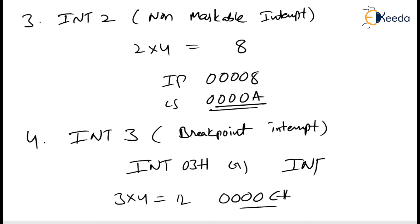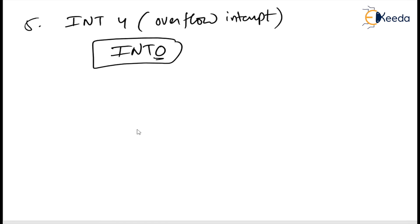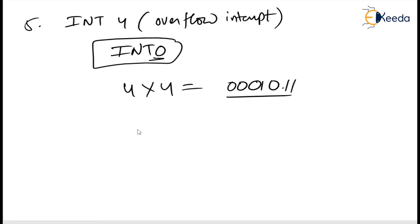The last dedicated interrupt is INT4, called overflow. This interrupt occurs if the overflow flag is set and the microprocessor executes the INTO (interrupt on overflow) instruction. It is used to detect overflow errors in signed arithmetic. The ISR value is type 4 multiplied by 4 equals 16, which is 00010H in the interrupt vector table. These five are called dedicated interrupts.